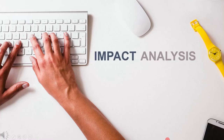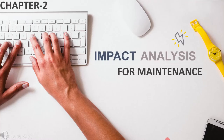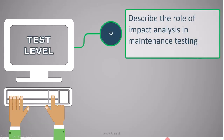In this lecture, we will address the last topic of this chapter, which is impact analysis for maintenance. Here we will see the second learning objective: describe the role of impact analysis in maintenance testing. It is marked as K2.